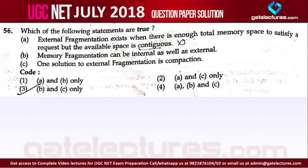Question number 56. Which of the following statements are true? External fragmentation exists when there is enough total memory space to satisfy a request but the available space is contiguous.